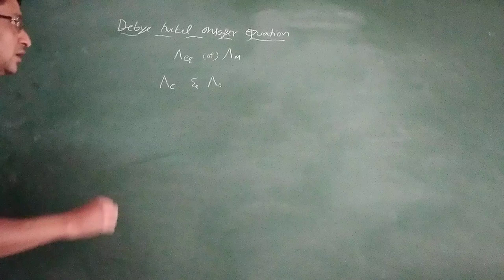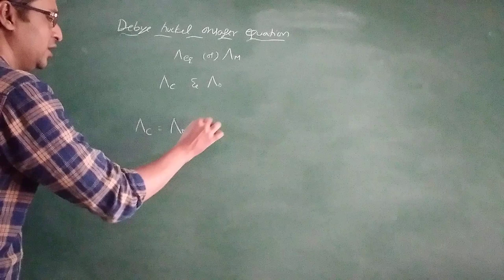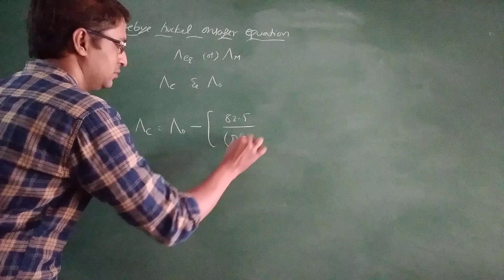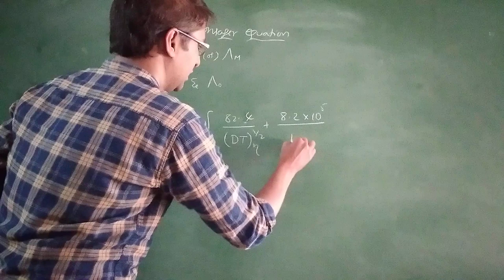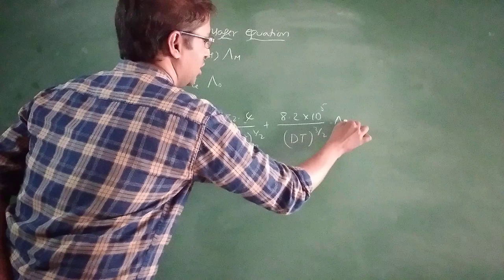The equation is lambda C equals lambda 0 minus 82.5 divided by DT eta to the power 1/2 plus 8.2 into F4 times 10 to the power 5 divided by DT to the power 3/2 times lambda 0 into root C. This is the Debye Hückel Onsager Equation.